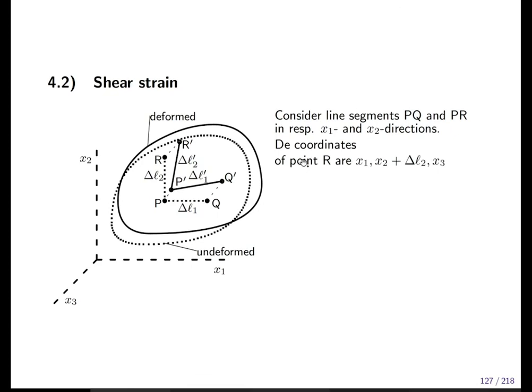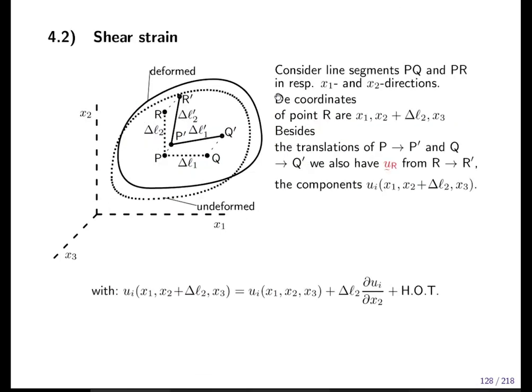New point R, there is still a Dutch word in my lecture slides, we missed one. Now point R has a delta l2, but not in the first element but in the second element. Same as before, Taylor expansion, and delta l2 corresponds to the second element, so we derive with respect to the second coordinate, not to the first as we had before. And we ignore higher order terms, nothing new, same trick.